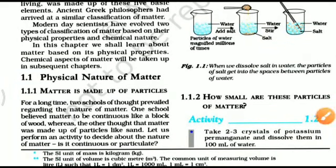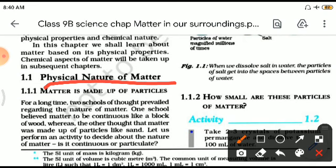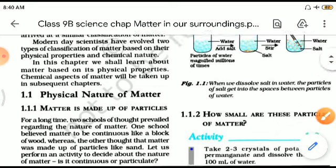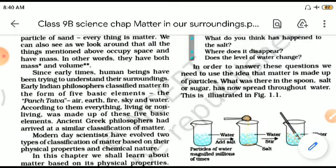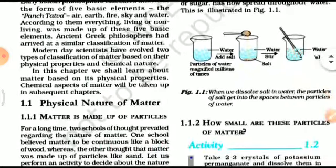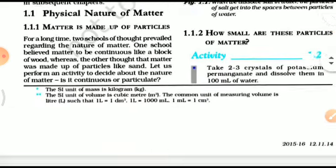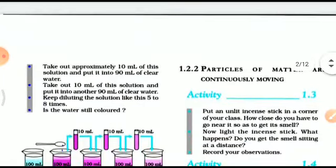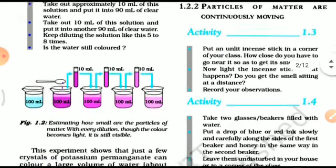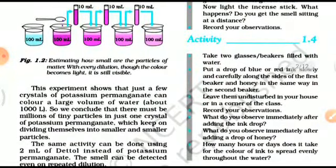Now let us come to the physical nature of matter. The first and foremost thing is that matter is made up of particles - small constituents which make up matter. It is yet to be determined how small these particles are, what the smallest constituent of matter is. This size is basically very, very small. Some experiments are there to show this, one done with potassium permanganate. It can be concluded through this experiment that there must be some tiny particles present in matter.